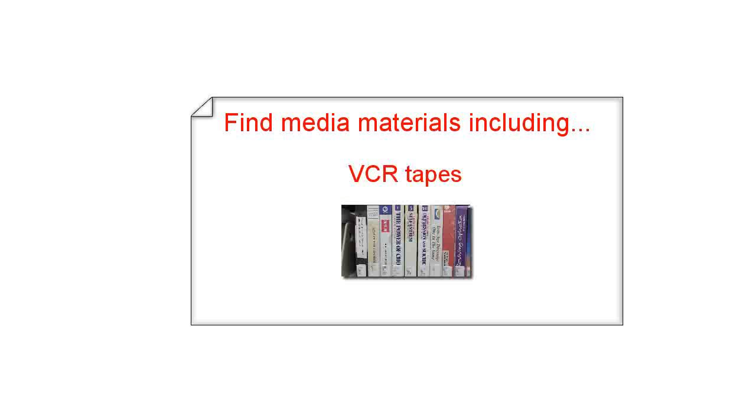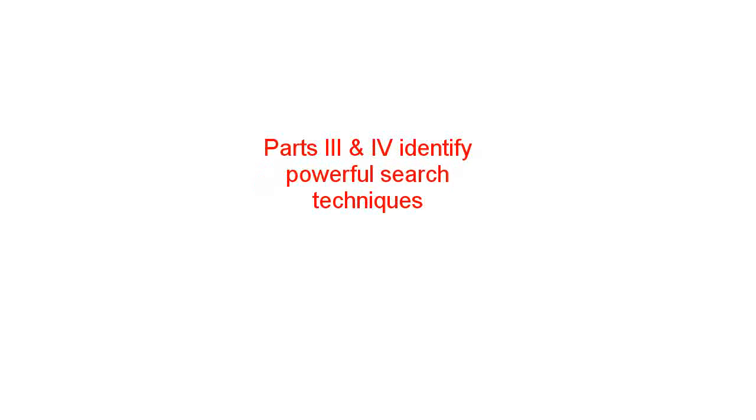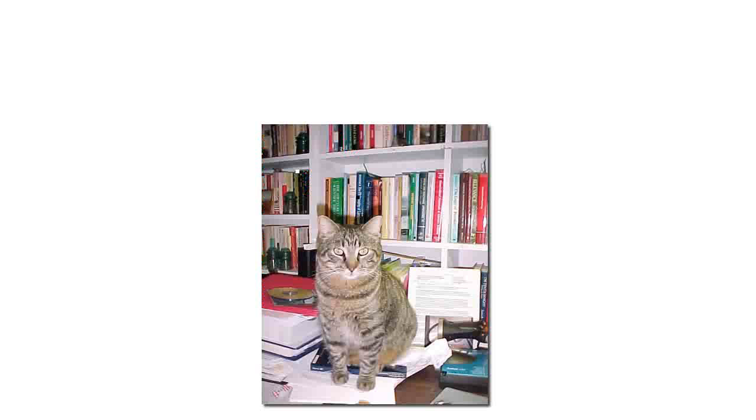Hello, and welcome to the Information Literacy Lessons at the University Libraries. This four-part lesson covers using the library catalog to find resources including books, magazines, and newspapers. You can also find media materials such as CDs, VCR tapes, and DVDs using the library catalog. Part 1 focuses on features of the basic search page. Part 2 outlines the functions available in the advanced search page. Part 3 and Part 4 identify powerful advanced searching techniques. We will start with Part 1 on using the basic search page of the library catalog.